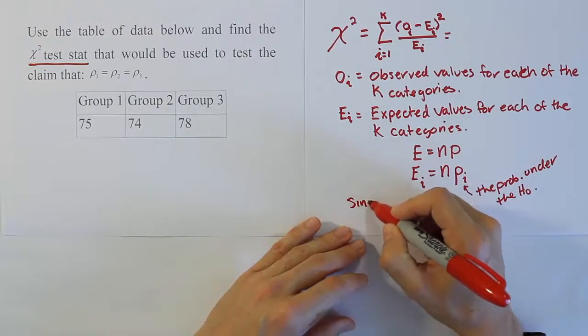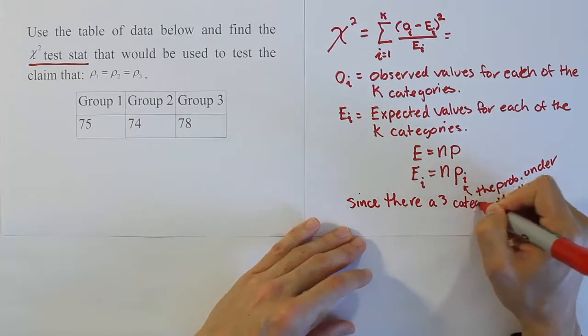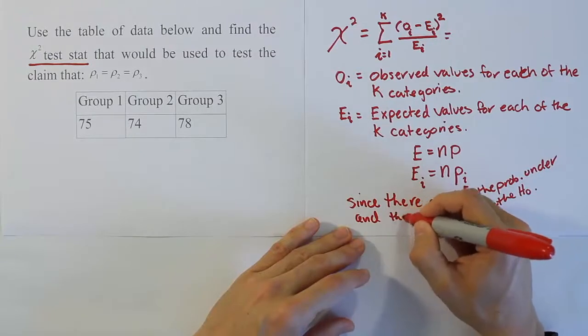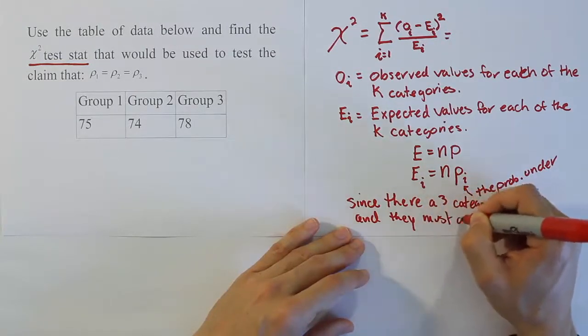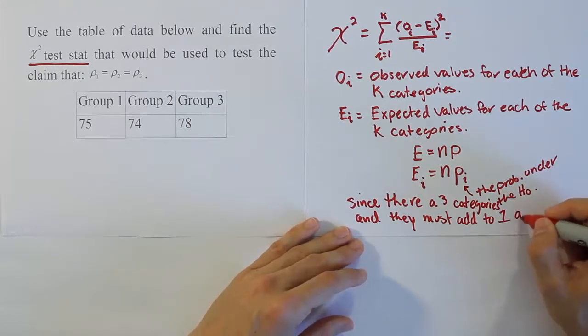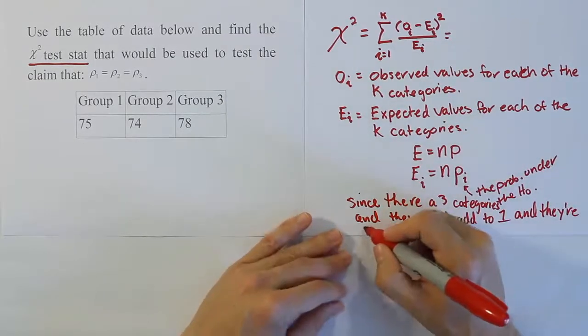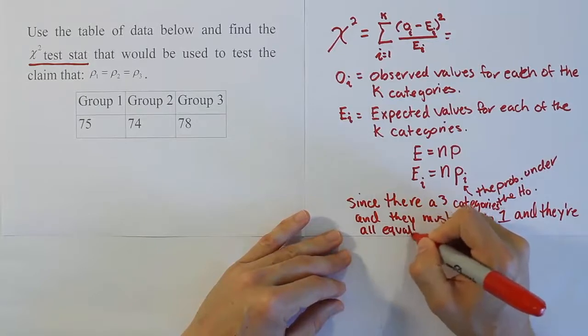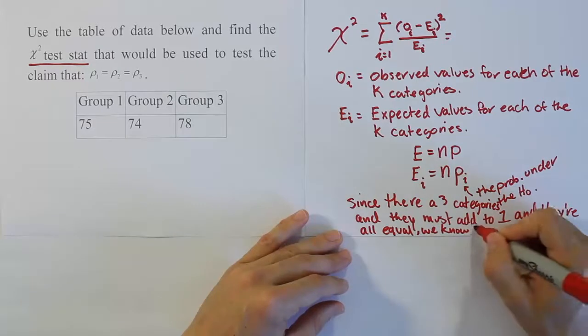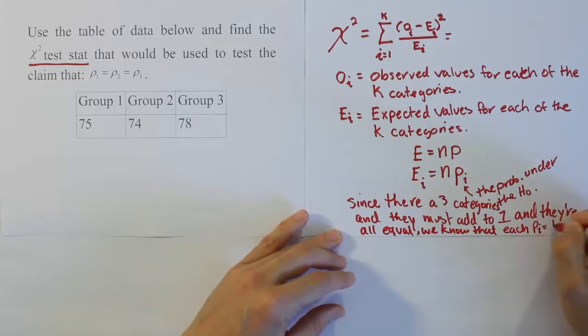So what we're saying here is very simple. Since there are three categories, and they must add to one or 100%, and they are all equal, we know that each pi equals one third.